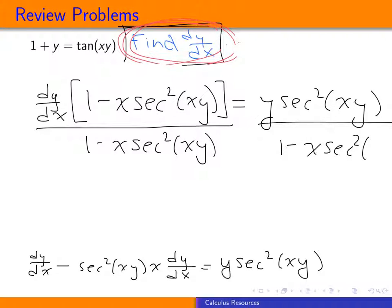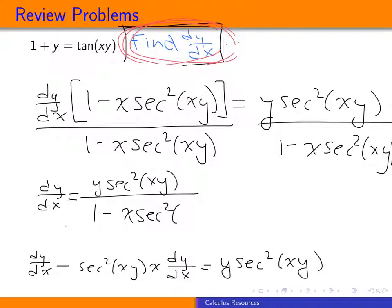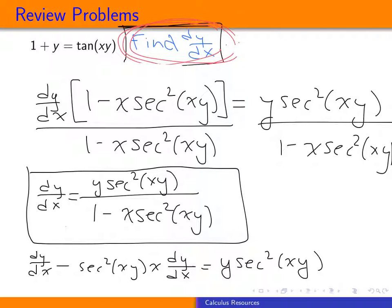And when we do that, we see that dy dx is going to be equal to y times the secant squared of x y, all over 1 minus x times the secant squared of x y. So even though we weren't able to solve the original equation for y, we were able to find what the slope of the tangent line to that curve is. So dy dx right here.